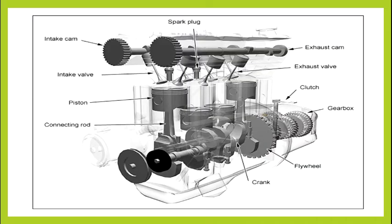In the picture, we can see the piston and inlet valve connected. The components include: inlet valve, piston connecting valve, crank, flywheel, clutch, gearbox, and other parts.